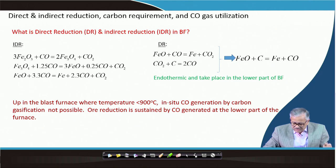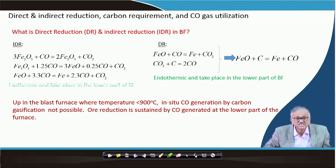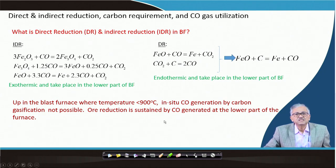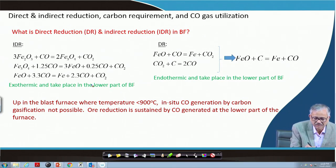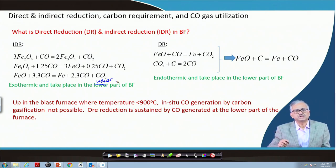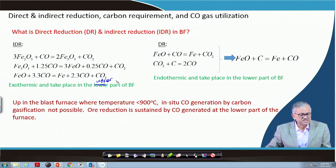In the upper part of the furnace, indirect reduction takes place, which is exothermic, and it happens in the upper part of the blast furnace — not the lower part.